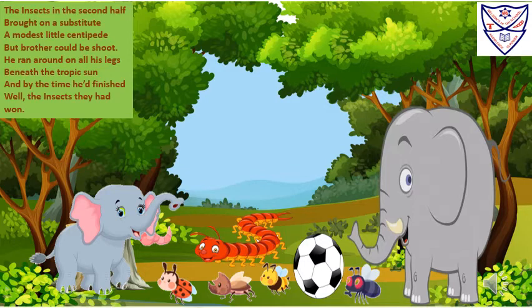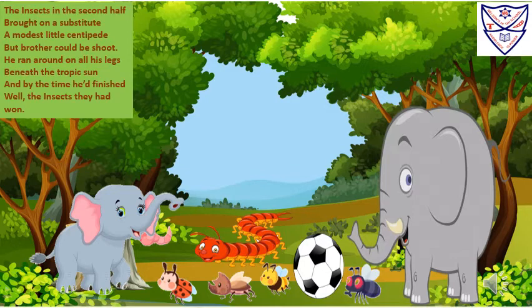In the second stanza, we find the insects brought a substitute — a new player to their team — and that substitute was the centipede. Do you know the speciality of a centipede? A centipede has a large number of legs. In this poem, the centipede played football well and made the insect team win the match, scoring a number of goals to secure their victory.